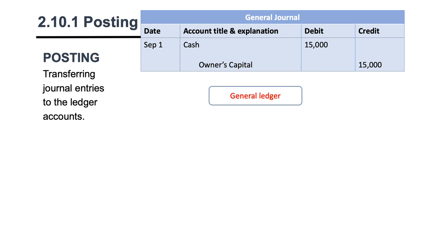But before we can post to the ledger, we need to finish journalizing. Once we finish journalizing, we can post to the ledger. Let's take the example in the slide — we have a journal entry: debit cash, credit owner's capital, and we have to post it into our ledger.